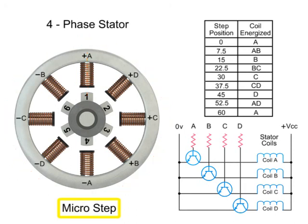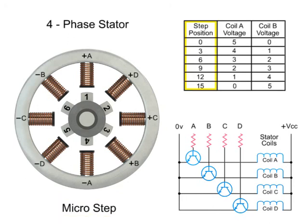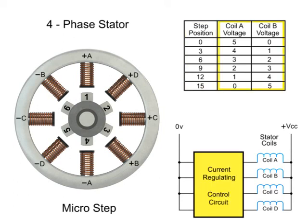Micro-stepping controls the current in the motor winding to a degree that further subdivides the number of positions between poles. To achieve micro-steps, the coils are only partially energized. As we apply a maximum voltage of 5 VDC to coil A and a minimum voltage of 0 VDC to coil B, rotor position 1 will line up.